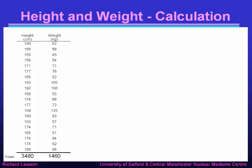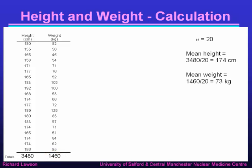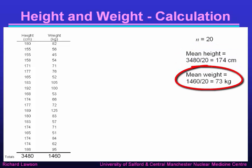To do the calculation, we tabulate the height and weight of all the patients. The values are clearly paired, so the patient with a height of 180 cm had a weight of 82 kg, the patient with a height of 155 cm had a weight of 56 kg, and so on. We calculate the mean height and weight: summing all heights gives 3480 cm, and summing all weights gives 1460 kg. With n = 20, the mean height is 3480 ÷ 20 = 174 cm, and the mean weight is 1460 ÷ 20 = 73 kg.